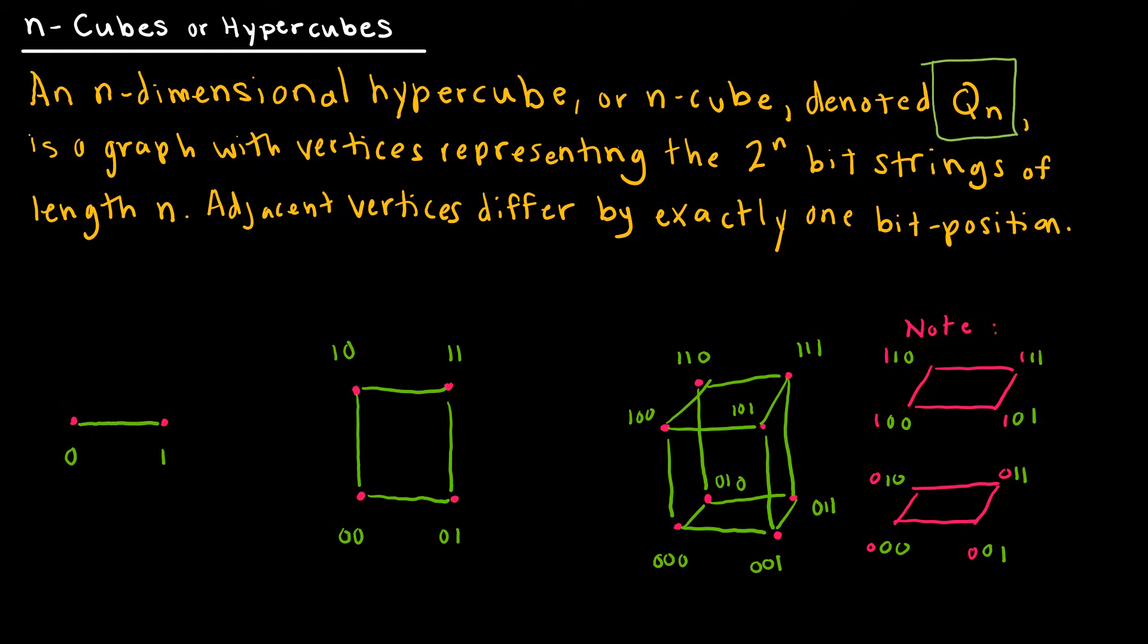If you notice, I have two bits, zero and one. I doubled that, took one and said this is 0,1, took another and said this is 0,1. On this one I added a 0 in front and on this one I added a 1 in front, then connected the dots.